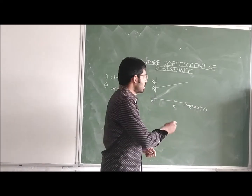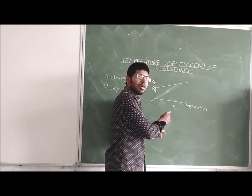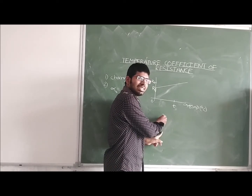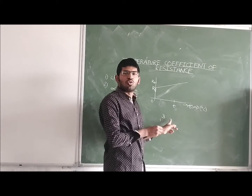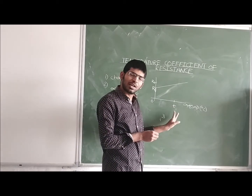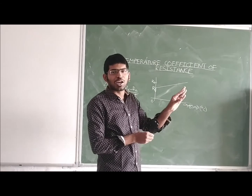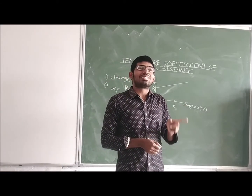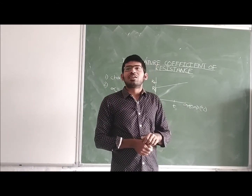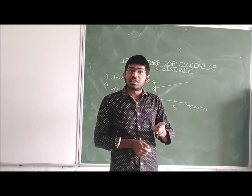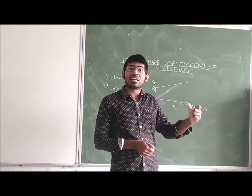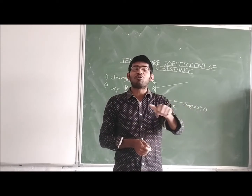In the 6-band resistor, the starting 3 bands are the 1st digit, 2nd digit, and 3rd digit. The 4th color band is the multiplier, the 5th color band is tolerance, and the 6th color band is used to indicate the temperature coefficient of resistance.